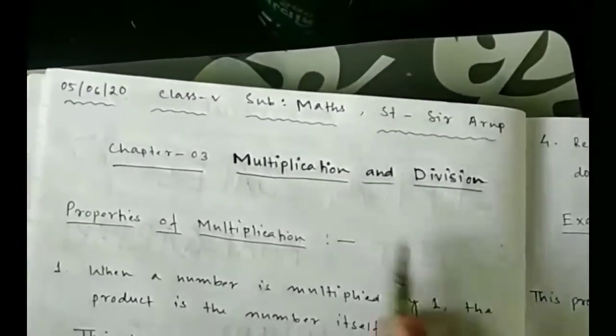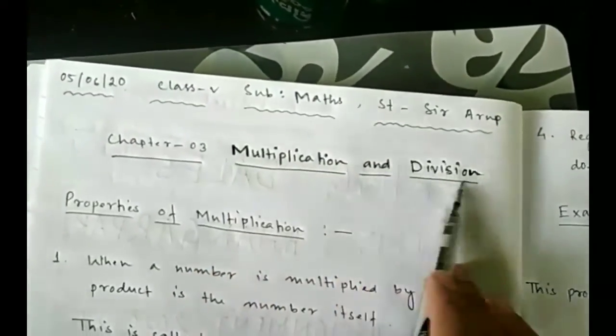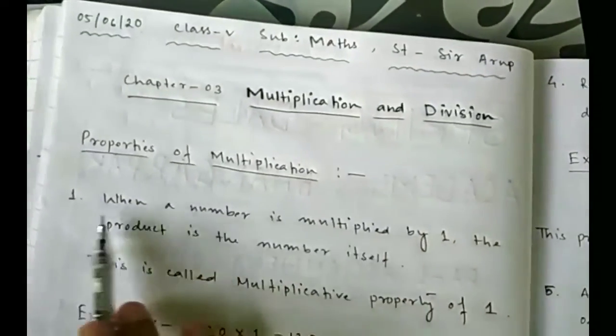We will start from chapter 3, that is multiplication and division. First, properties of multiplication. First property: